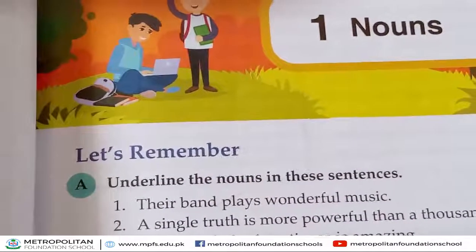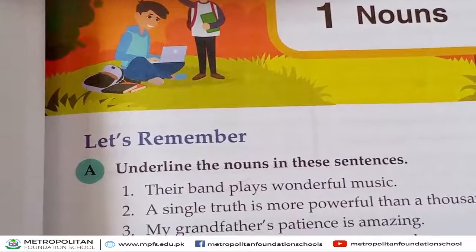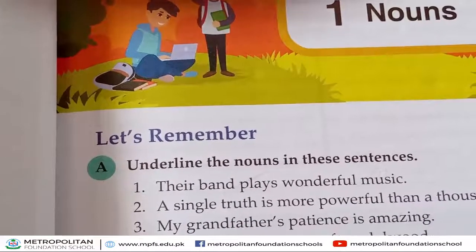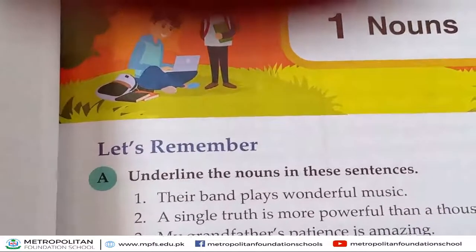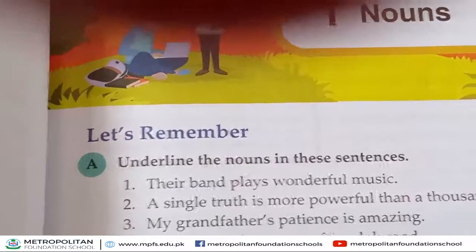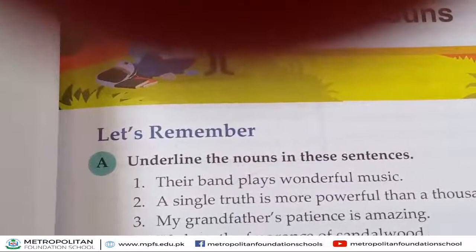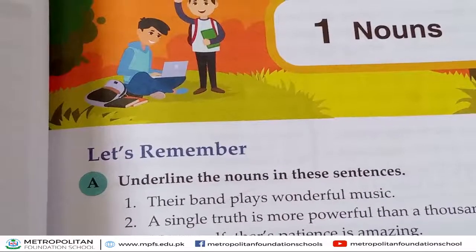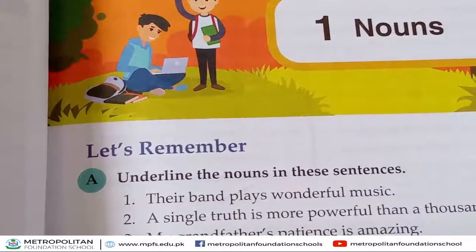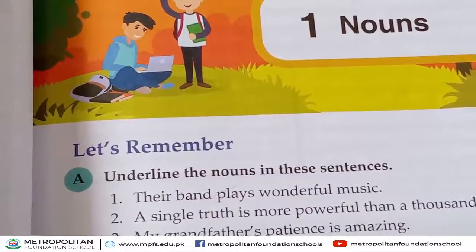And then proper noun. Proper noun shows specific names — somebody's name, city, and subject. They are specific names that show the proper noun. Proper names are called the proper noun. Like example, Shahla — Shahla is the name of a girl, and it is a proper and specific name. Karachi is also a city name. History is also a subject name. So it is called the proper noun.